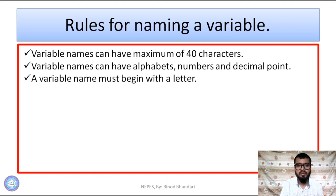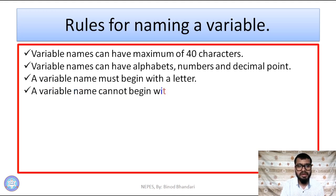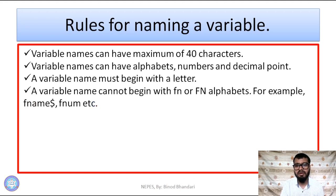A variable name must begin with a letter. We have to use any letter to start writing the variable name. We cannot start with any number. A variable name cannot begin with the FN alphabets. For example: FNname$, FNnom etc. We cannot use these two alphabets (F and N) at the start while writing a variable name.